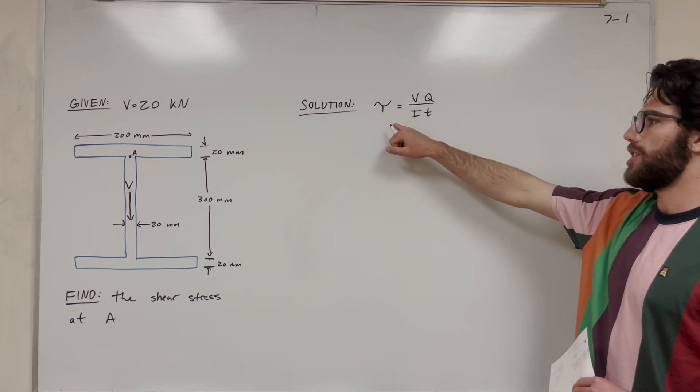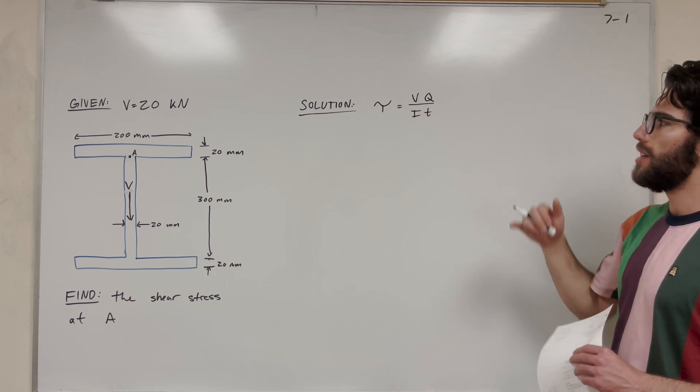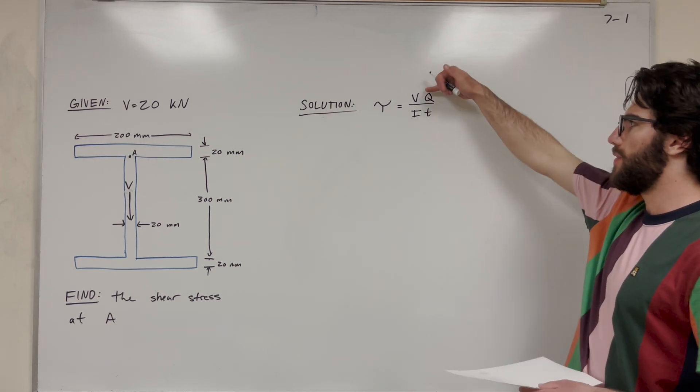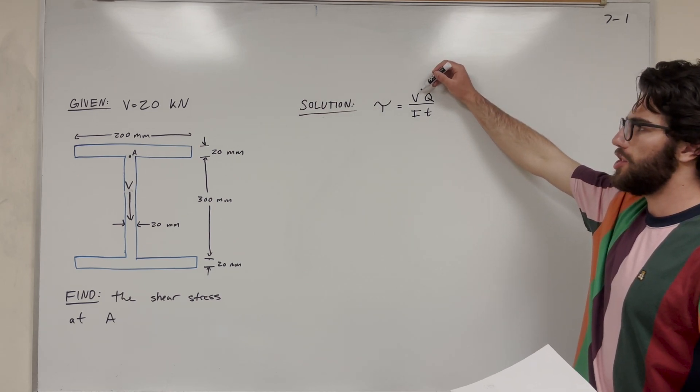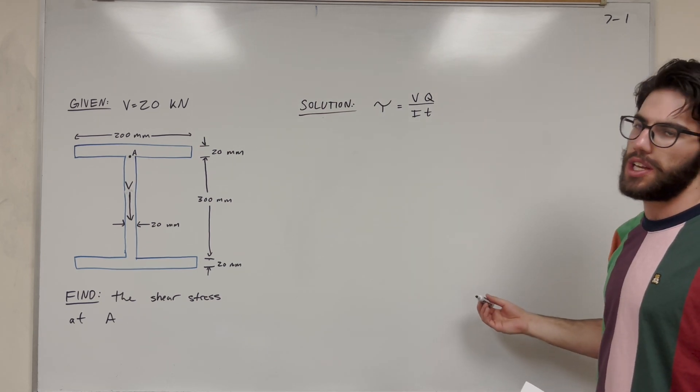So to do that, we're going to be using our shear stress equation, and what that is is VQ over IT. So we need to basically figure out what all of these are so we can plug them into the equation. First of all, V is shear force, and we know what that is, 20 kilonewtons.